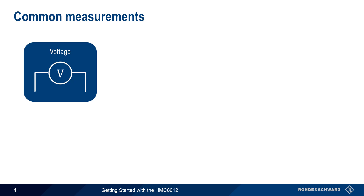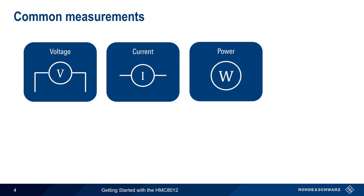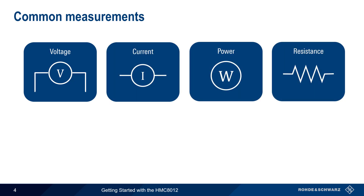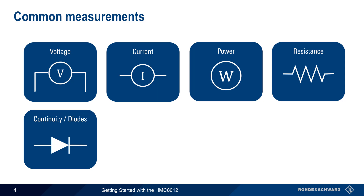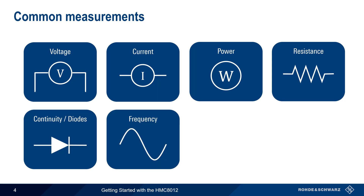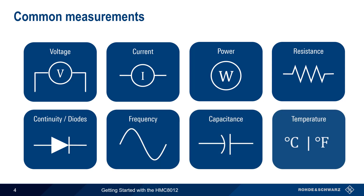The eight most important measurements on the HMC 8012 are voltage, current, power, resistance, continuity or diode measurements, frequency, capacitance, and temperature. In the following sections, we'll provide detailed information on how to configure and make each of these measurements.